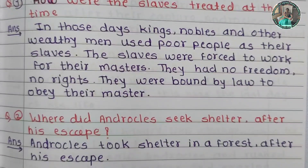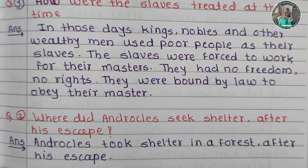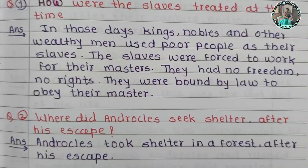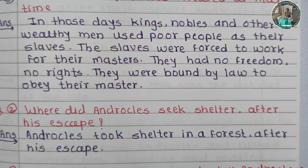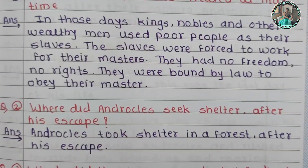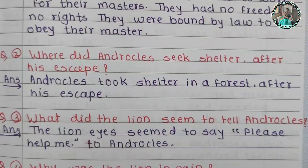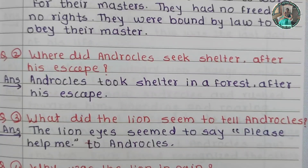Question number two: Where did Androcles seek shelter after his escape? Question number three: What did the lion seem to tell Androcles? The lion's eye seemed to say 'please help me' to Androcles.